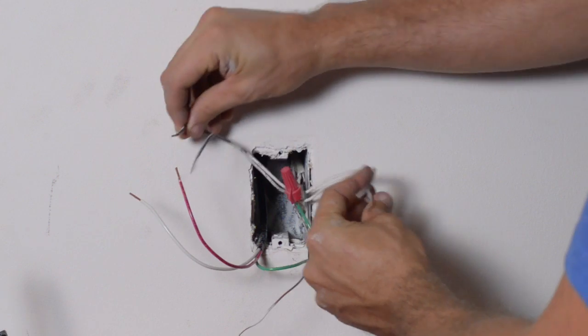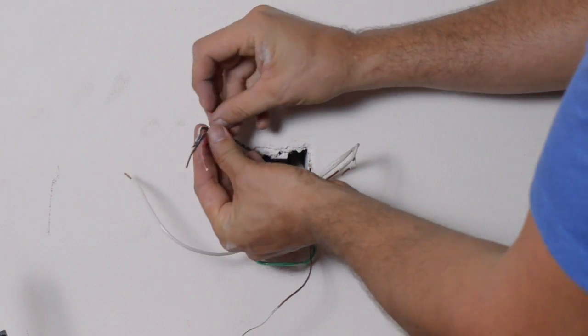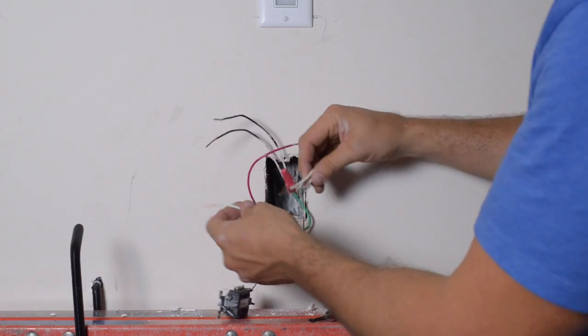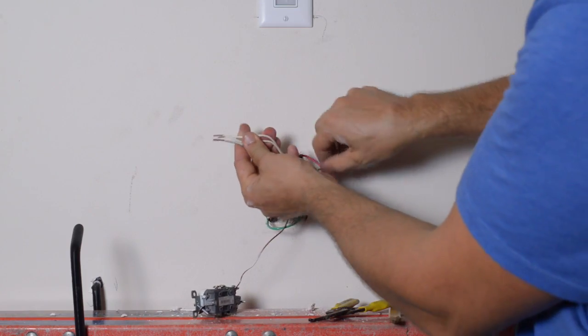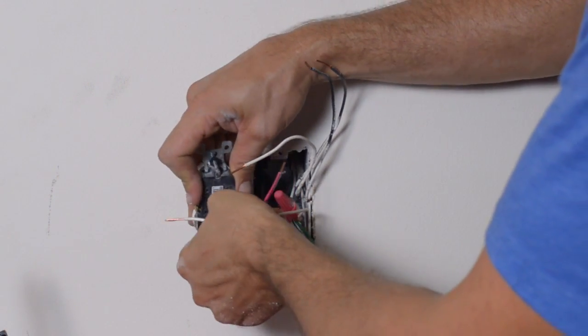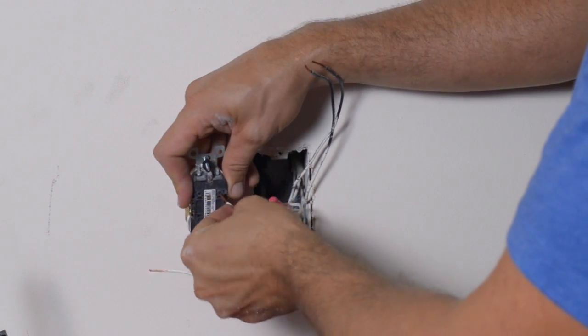And then I want to take all my hots, the two blacks and the reds, and match them together. And the thing is we want to make sure the power that's coming in goes out to the other outlets and to my new outlet. And then same thing with the white. So I'm going to stick the white wires all together on the white side.